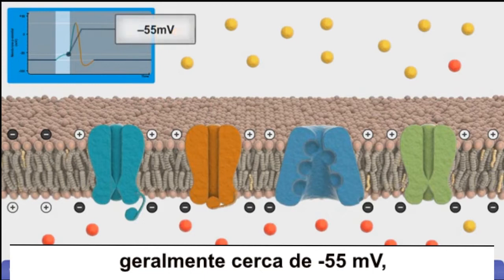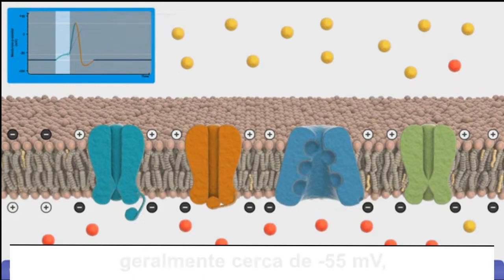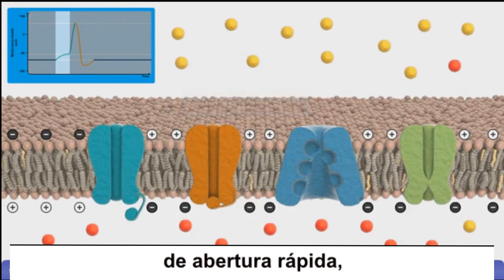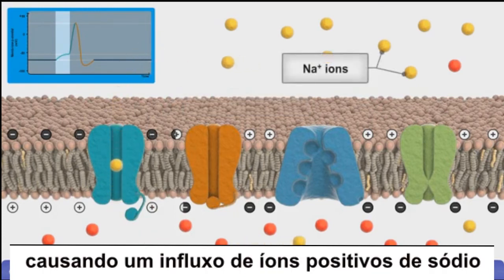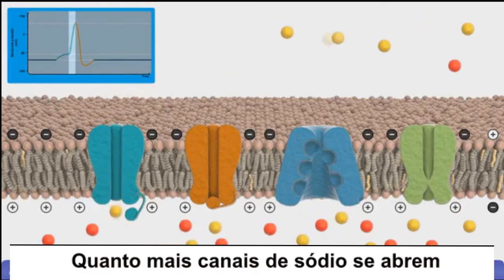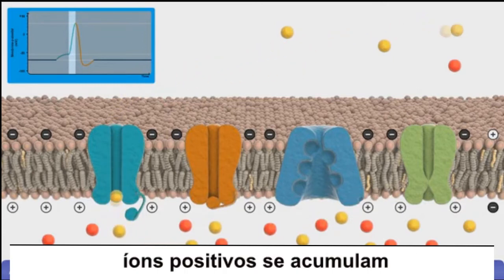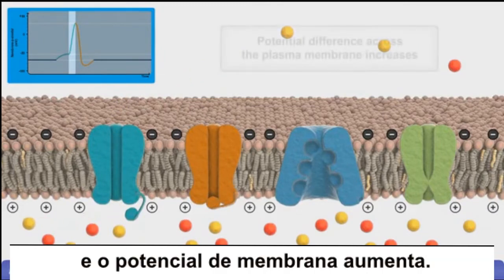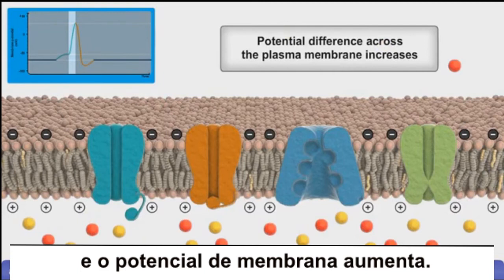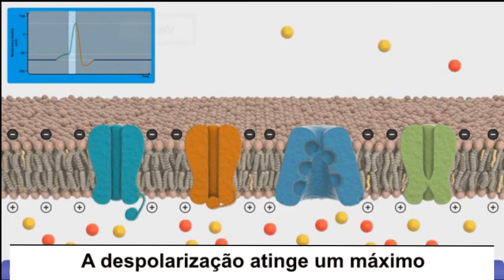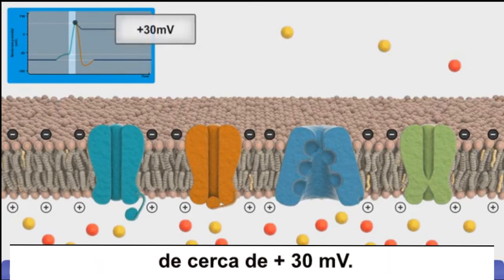When a stimulus depolarizes the cell membrane to a threshold potential of usually about minus 55 millivolts, this triggers the activation gates of voltage-gated sodium channels to open quickly, causing an influx of positive sodium ions down their concentration gradient, which results in further depolarization. As more voltage-gated sodium channels open, positive ions build up on the inside of the plasma membrane, and the potential difference across the plasma membrane increases. Depolarization reaches a maximum of about plus 30 millivolts.